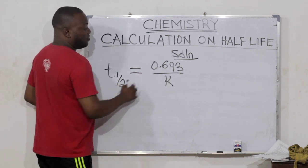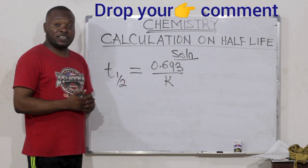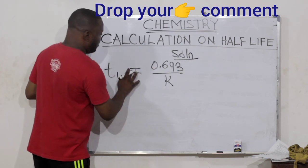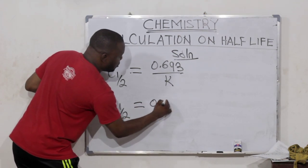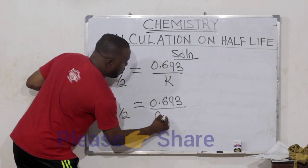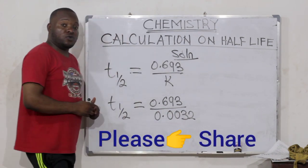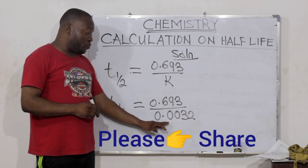All we have to do here is to substitute our decay constant, and the answer comes out. Our half-life becomes 0.693 divided by 0.0032. Remember, the question says that the decay constant is equal to 0.0032.